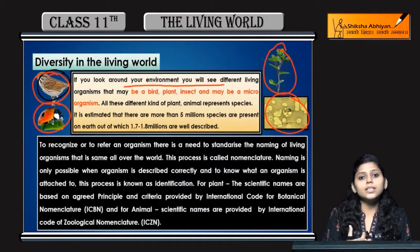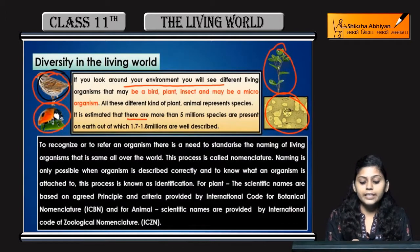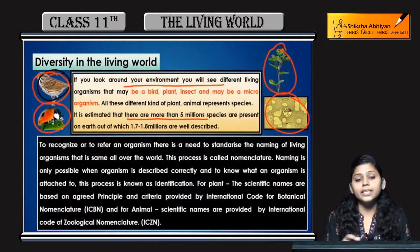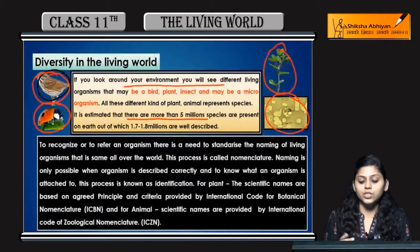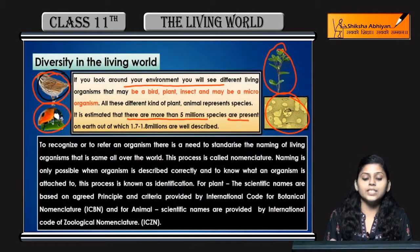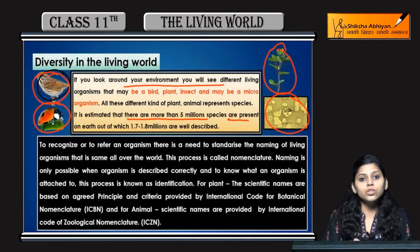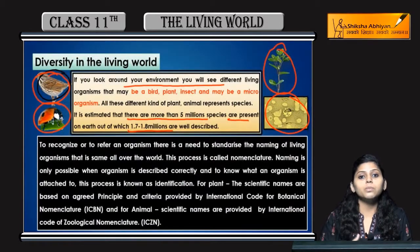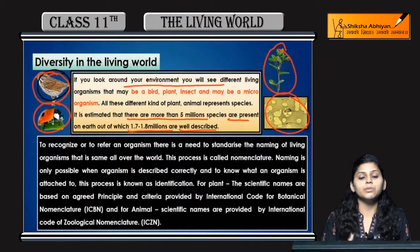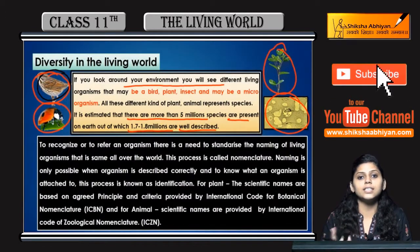There are so many diverse organisms that it is very difficult to study them all. It is known that there are more than 5 million species present on Earth, and out of them, only 1.7 to 1.8 million are well studied and well described.